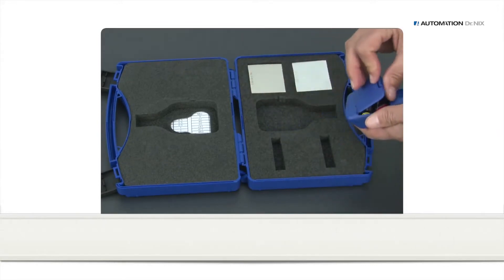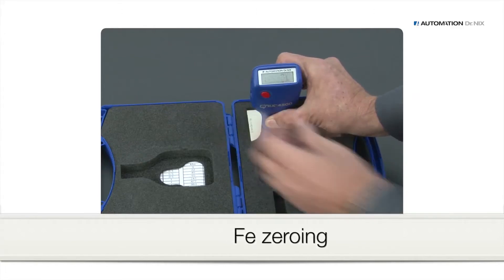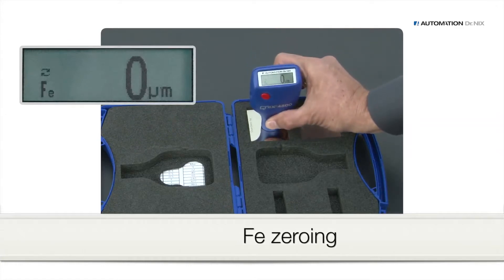To perform a zeroing of the gauge, put it onto the zero reference plate, here iron. Press red button. Lift gauge at least 10 cm or 4 inches up until the display shows zero.